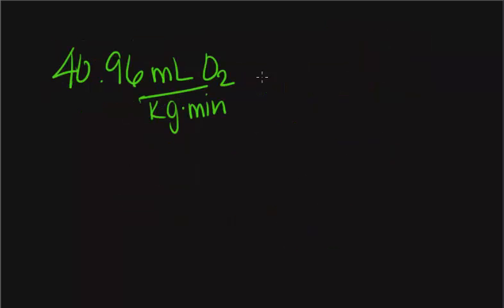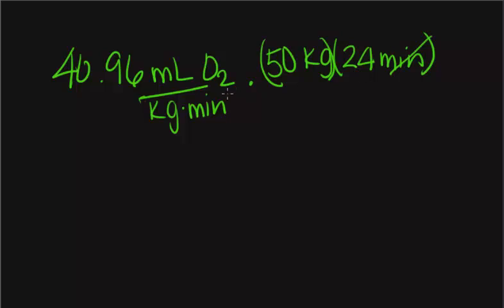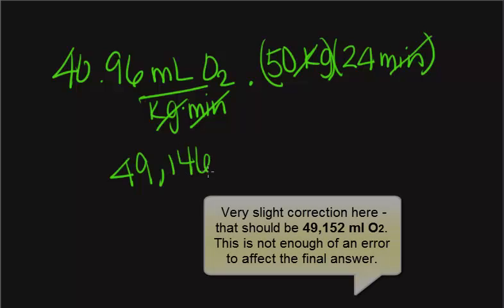We want to convert this value into calories. This woman weighs 50 kilograms and has been running for 24 minutes. We multiply and cancel out our units to get a value of 49,146 milliliters of O2.